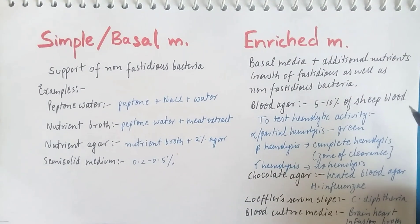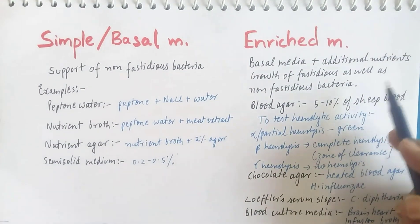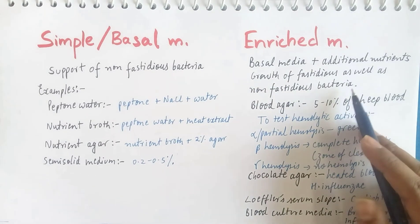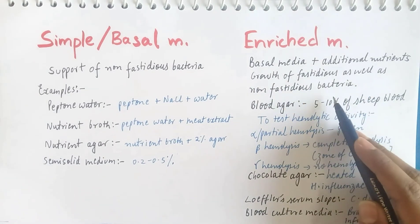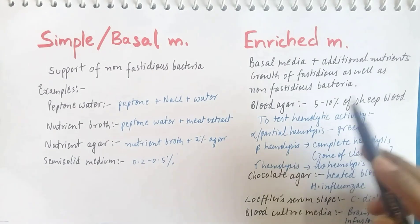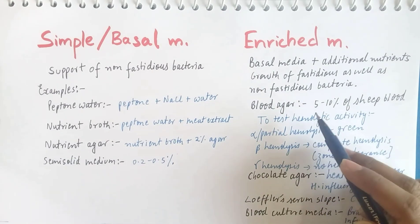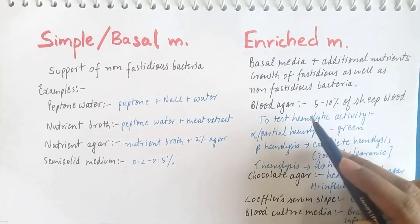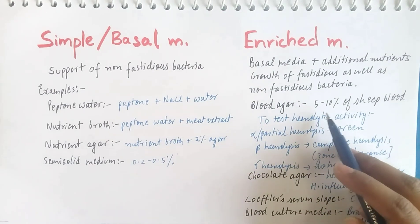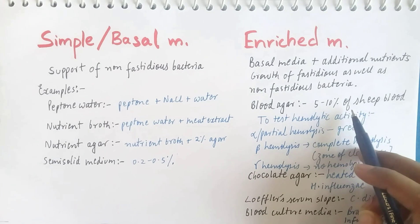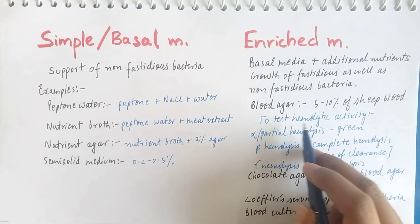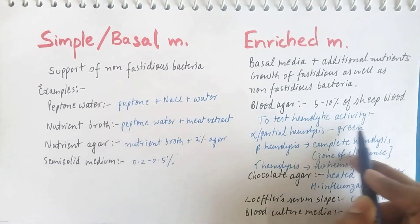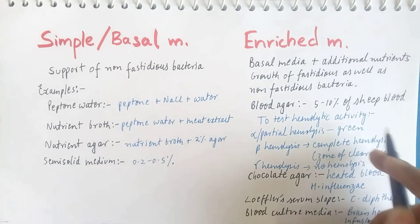Moving on to enriched media — in this, additional nutrients are added to the basal media and it is used for the growth of fastidious as well as non-fastidious bacteria. The first type of enriched media is blood agar, in which 5 to 10% sheep blood is added. Blood agar is mainly used for testing the hemolytic activity of bacteria.